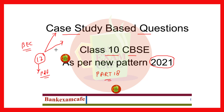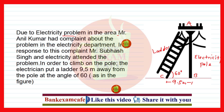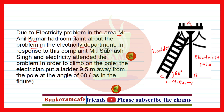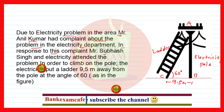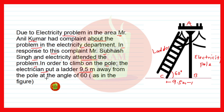So friends, let us move to the question. Due to an electricity problem in the area, Mr. Anil Kumar complained to the electricity department. In response to this complaint, Mr. Subhash Singh, an electrician, attended the problem. In order to climb the pole, the electrician put a ladder 9.5 meters away from the pole at an angle of 60 degrees, as shown in the figure.